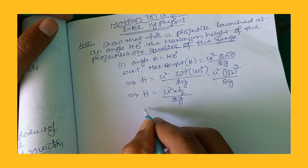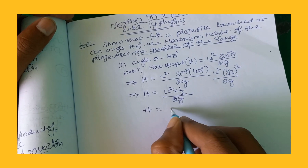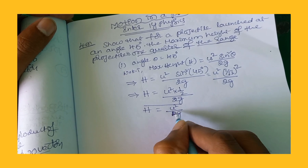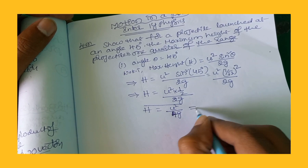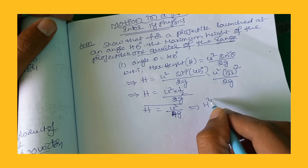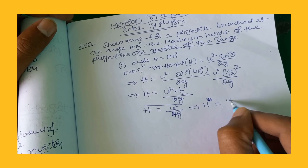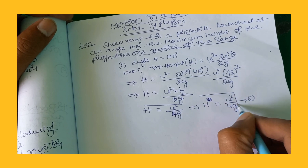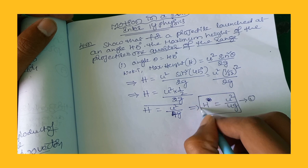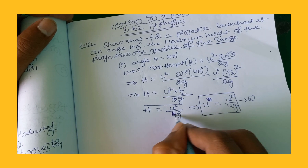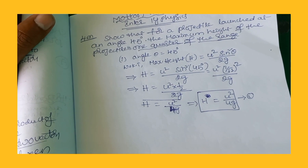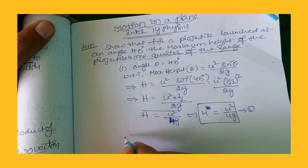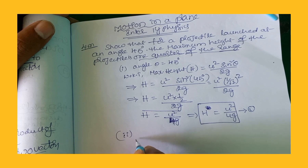Simplifying, H equals u squared divided by 4g. This is equation number 1: H equals u squared by 4g.